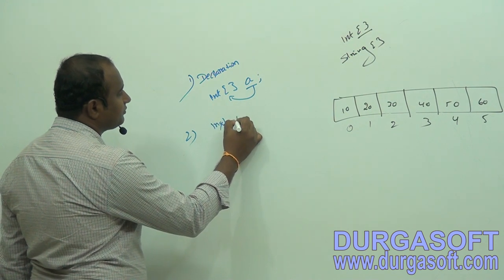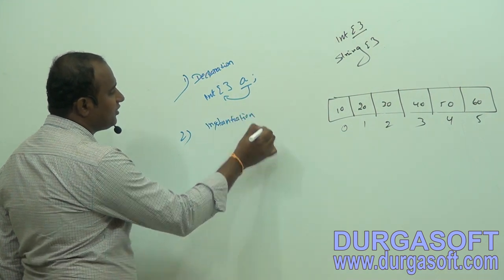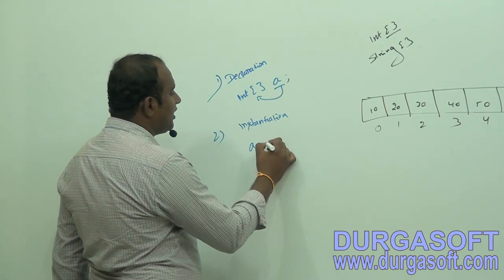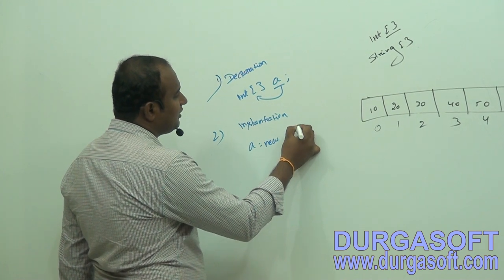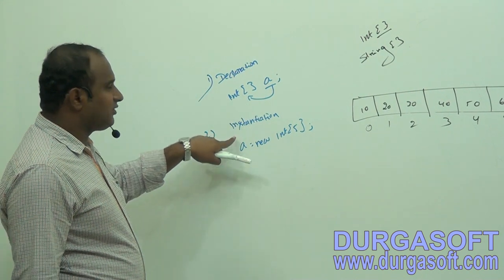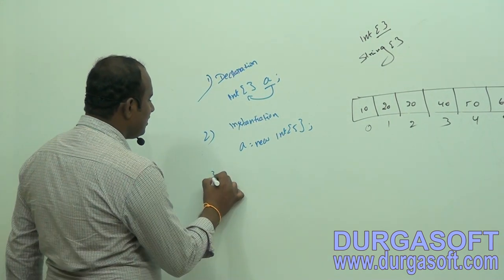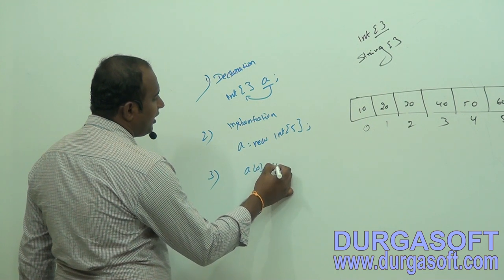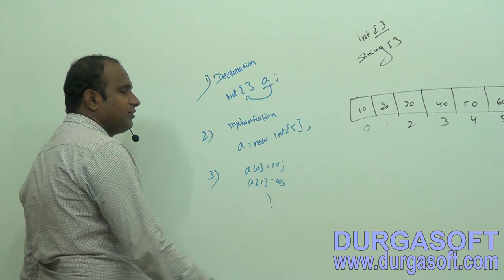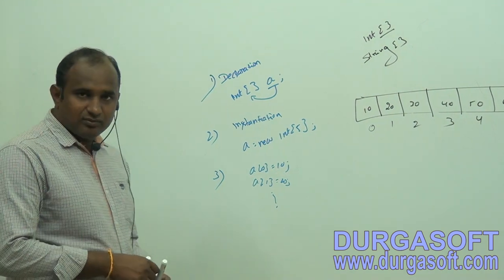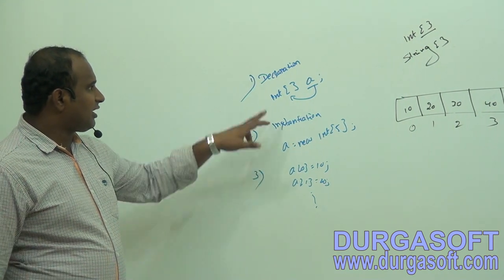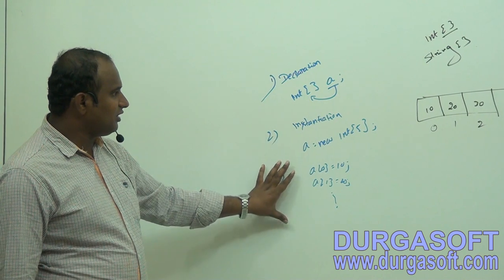The third approach is initialization — just assign the values: A[0] = 10, A[1] = 20, and so on. So the three steps are: declaration, instantiation, and initialization. Alternatively, these three steps can be done in a single way.